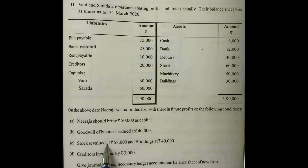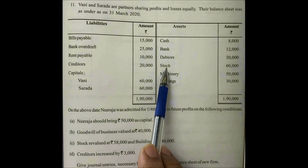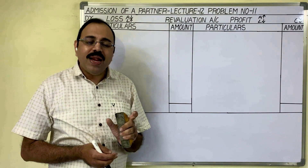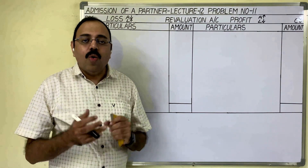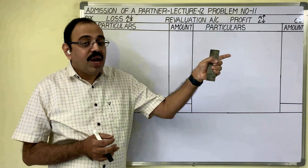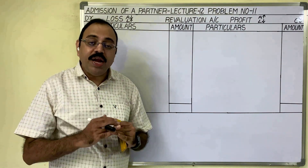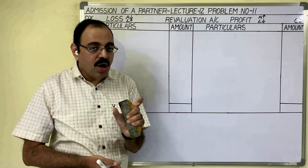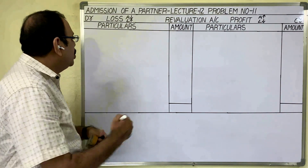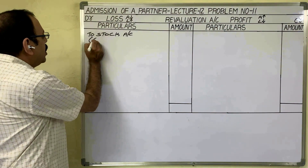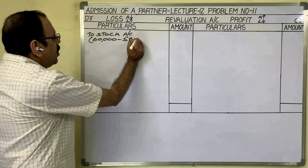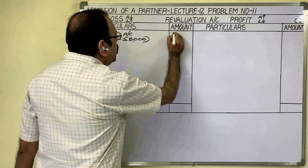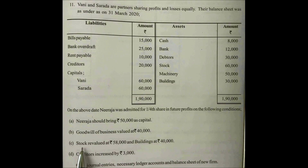Stock is revalued at 58,000 rupees. In the old balance sheet, stock value is 60,000 rupees. At the time of admission the old partners came to know its market value is 58,000 rupees. Stock is reduced by 2,000 rupees — this 2,000 is a loss, so it should be debited to revaluation account and credited to stock account. Calculation shown in column: old balance sheet value 60,000 minus market value 58,000 equals reduction of 2,000 rupees.